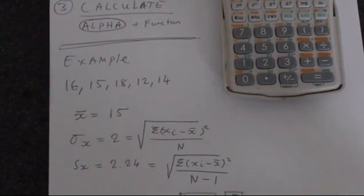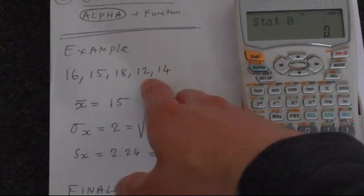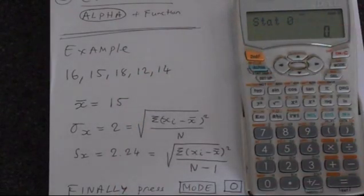So I'll move down here. We've got an example. We've got 16, 15, 18, 12, and 14.